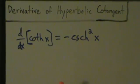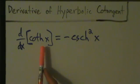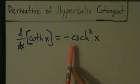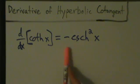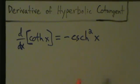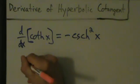Here's the derivative of the hyperbolic cotangent. So d/dx of coth of x equals negative hyperbolic cosecant squared of x. I'm not really sure how this would be pronounced, but anyway, let's go ahead and jump right in.